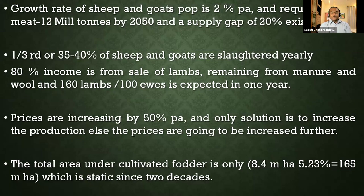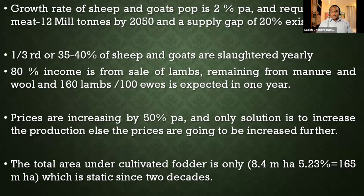Out of 165 million hectares of cultivable land in India, only 8.4 million hectares — about 5 percent — is going for almost 500 million animals, while the remaining 95 percent is used for cultivation of grains, fruits, and vegetables for 140 crore people. Food produced from livestock also goes for human consumption, so that concept has to become very clear.